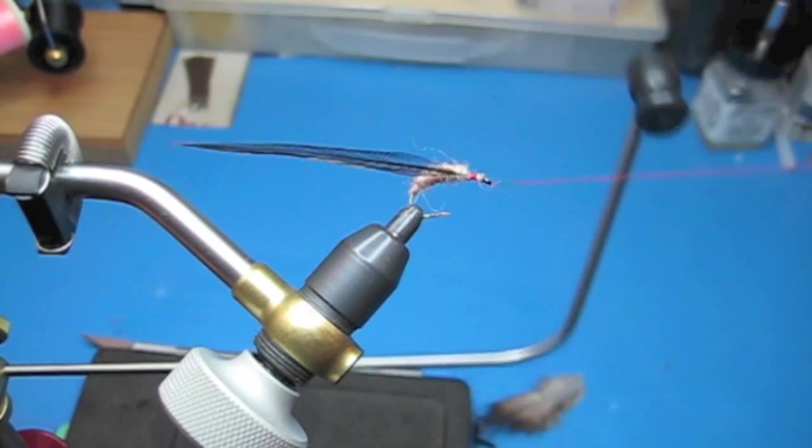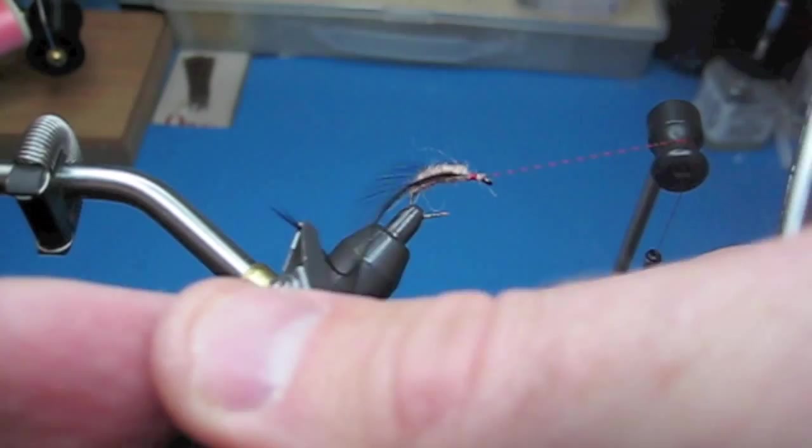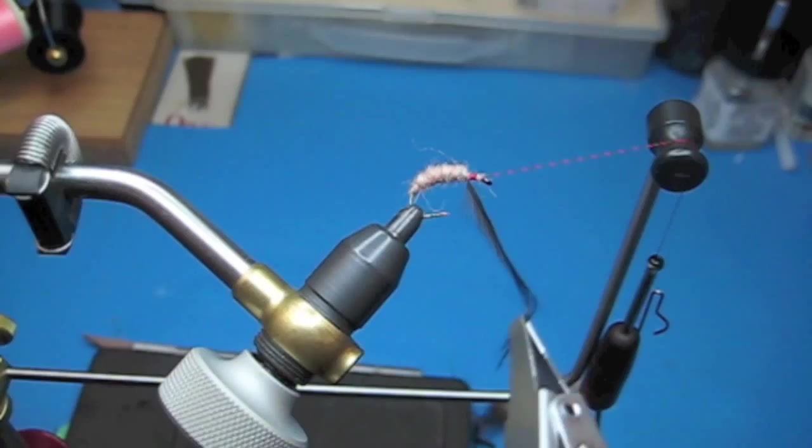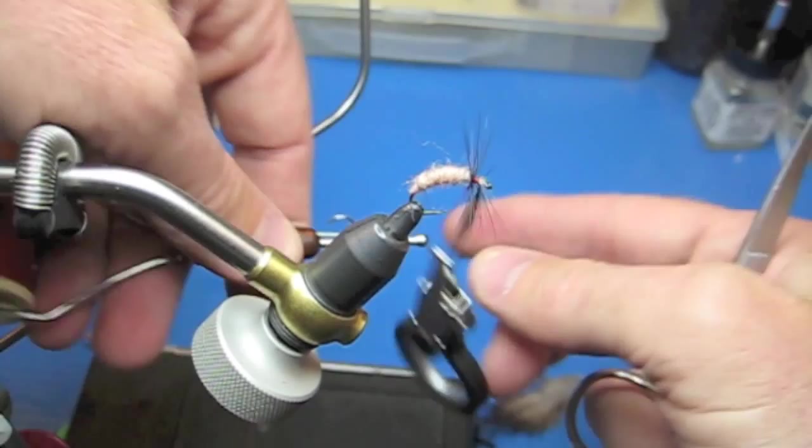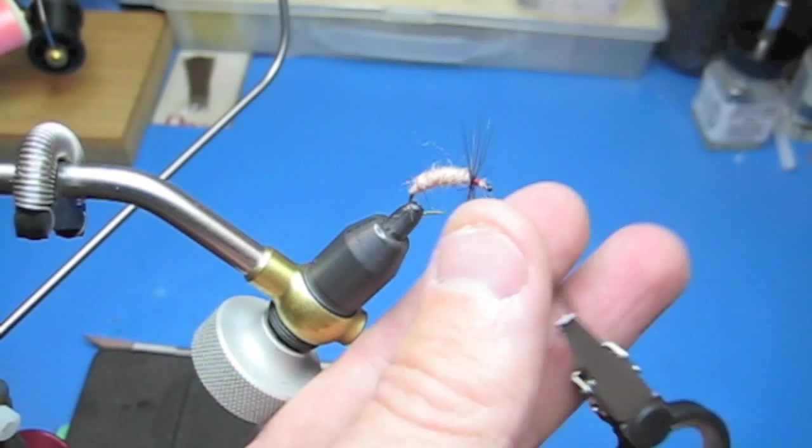Hang it. Clip your hackle and spin it once, twice. Plenty enough. These are sparse hackled flies. Tie your hackling off. Just three times is all that's needed.